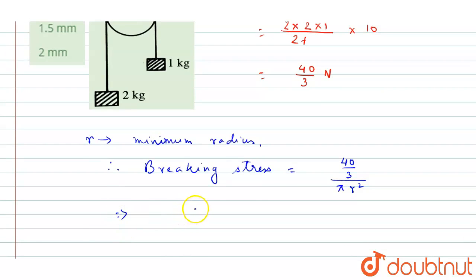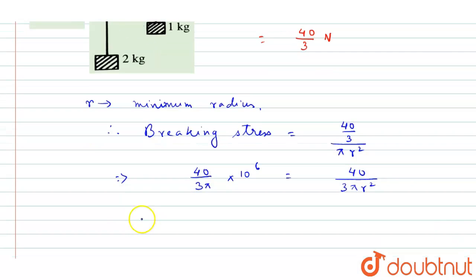Is given breaking stress is 40 by 3π times 10 to the power of 6 Newton per meter square. So now we will write that equals 40 by 3π r square. From here we will get the value of...